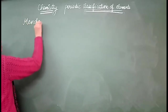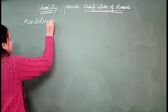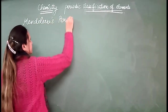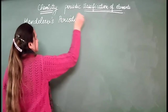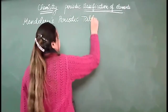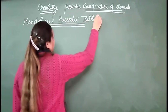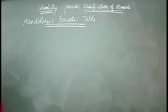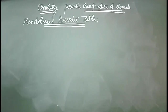Today we will be discussing the Mendeleev periodic table. After the Dobereiner triads, the Newland Law was there. The Newland Law of Octaves suffered some limitations: it was only limited to calcium and lighter elements. Hydrogen was not justified, and cobalt, nickel, and iron were not actually justified.